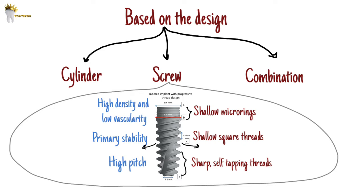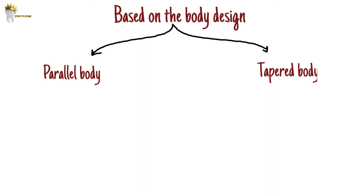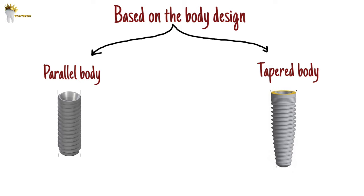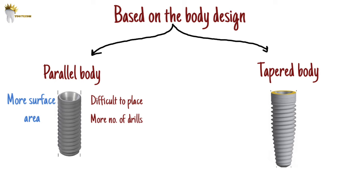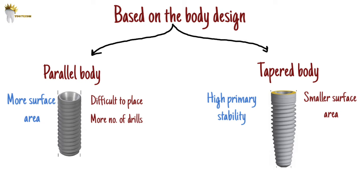Based on body design, there are parallel body and tapered body implants. Parallel body implants have more surface area compared to tapered body implants, but they are difficult to place — if you accidentally widen the osteotomy, their primary stability is reduced. They also require more drills to prepare the osteotomy. Tapered body implants can achieve high primary stability with minimal drilling even in low-density bone, with the only disadvantage being their smaller surface area compared to parallel body implants.